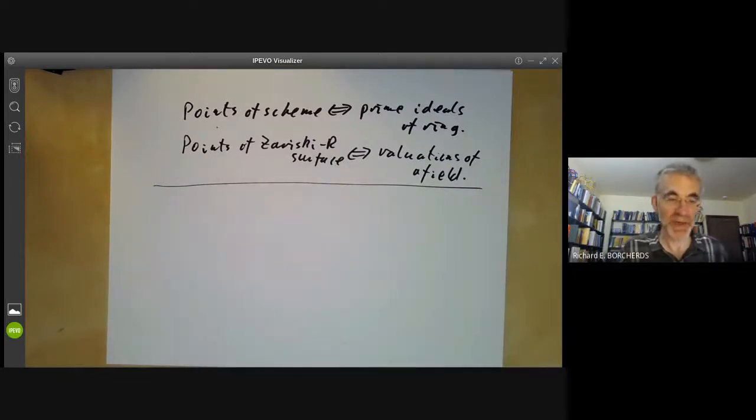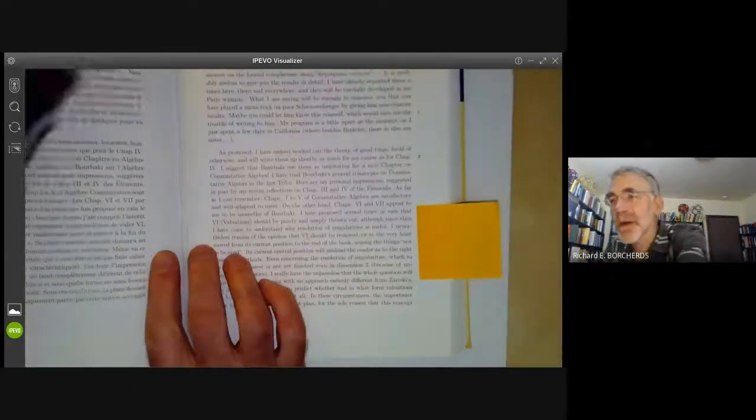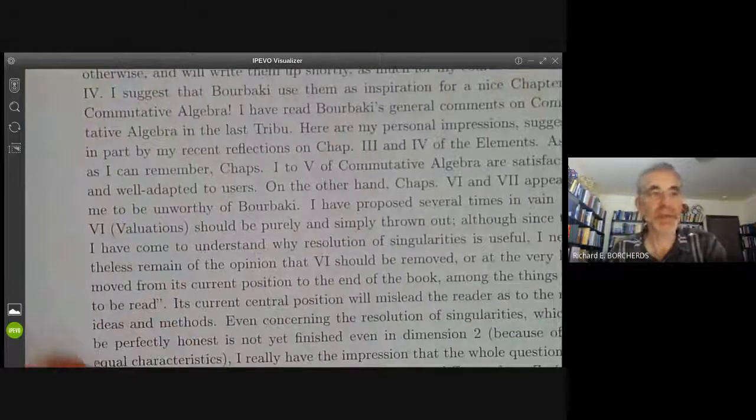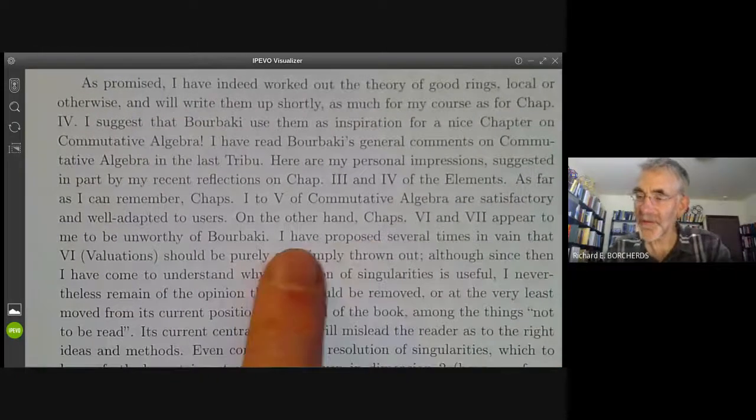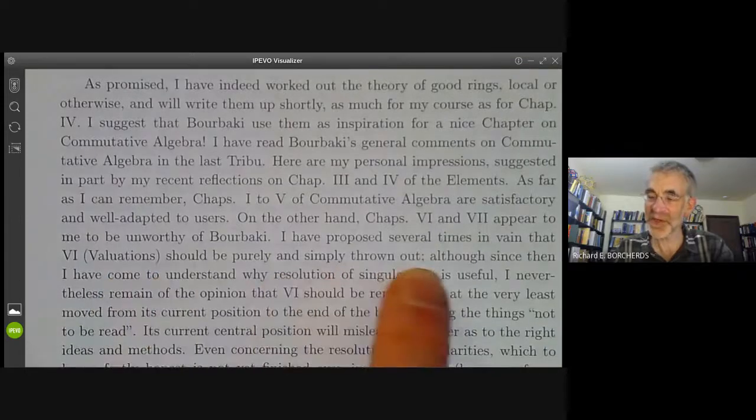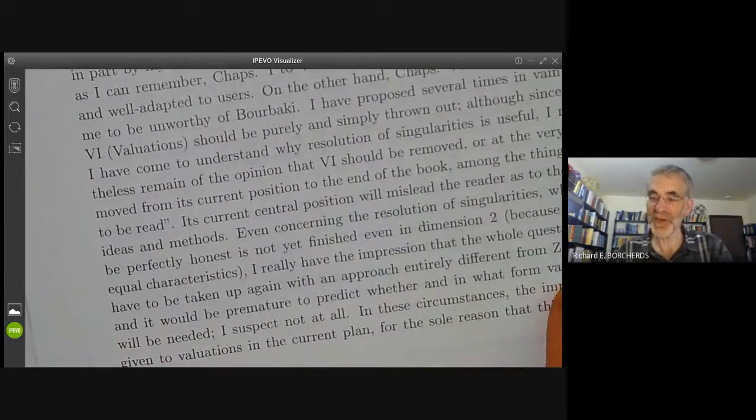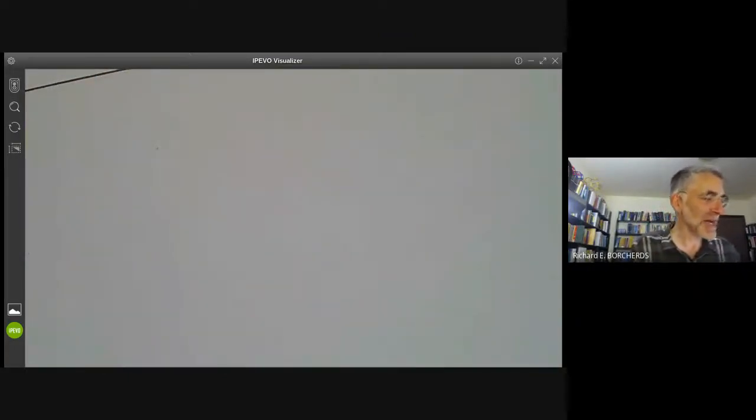Anyway, Grothendieck pretty much eliminated non-discrete valuations from algebraic geometry. He really had an intense dislike of them. I even found a quote by him. So this is a letter he wrote to Serre. And if I magnify it a bit, you can see his opinion of valuations. So here it says, I've proposed several times in vain that chapter six on valuations, he's talking about Bourbaki's book on commutative algebra, should be purely and simply thrown out. And then he goes on to say, it would be premature to predict whether and in what form valuations will be needed. I suspect not at all. And in his EGA, he goes out of his way to eliminate non-discrete valuations whenever possible. So Grothendieck's judgment is that non-discrete valuations are probably not very useful and you should just stick to discrete ones.